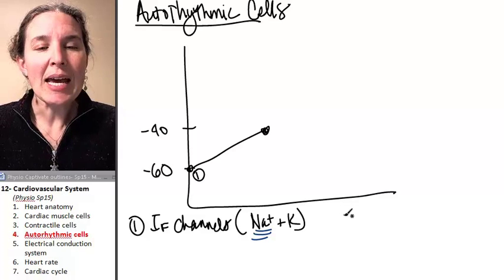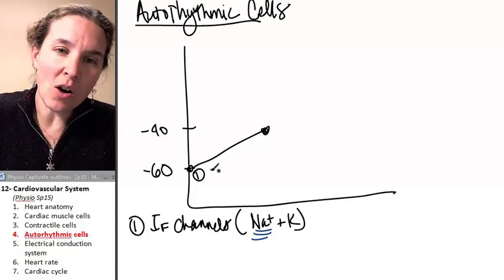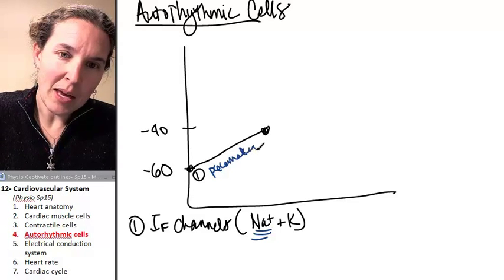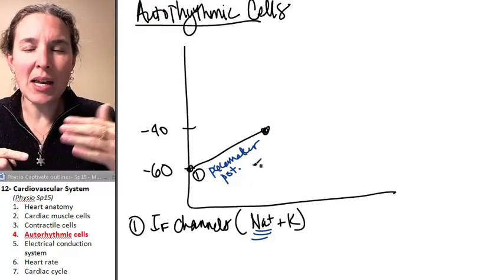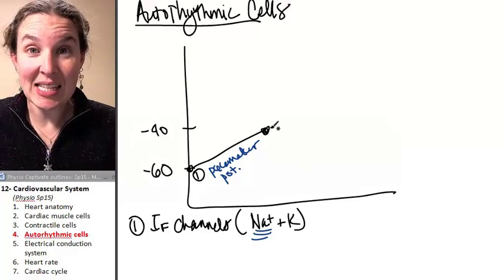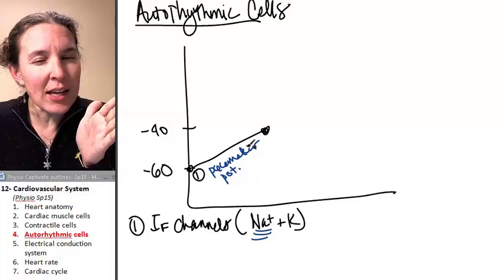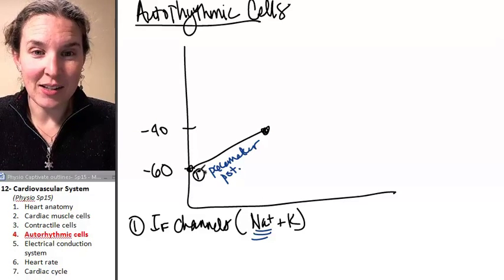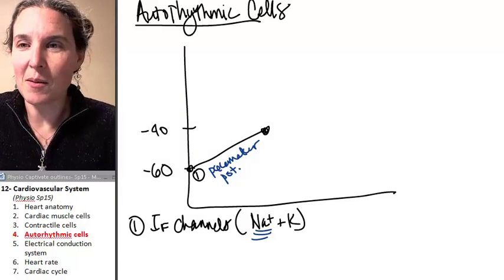And this is totally true. Now these funny channels create what's called the pacemaker potential. It's not a resting potential because it doesn't stay at the same level. It's a pacemaker potential. Eventually the leaky channels allow enough sodium into the cell that we reach threshold.